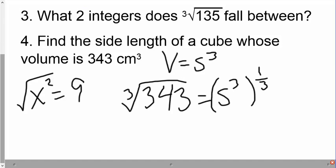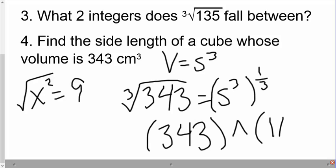So to do this in your calculator, you can do parentheses, 343, raised to the parentheses, 1 divided by 3, or the 1/3 power. And that will give us 7. So the side length of that cube would be 7. All right, let's try another one.